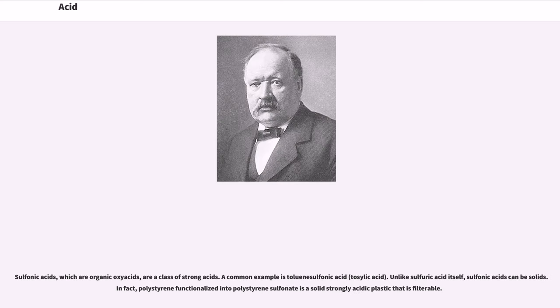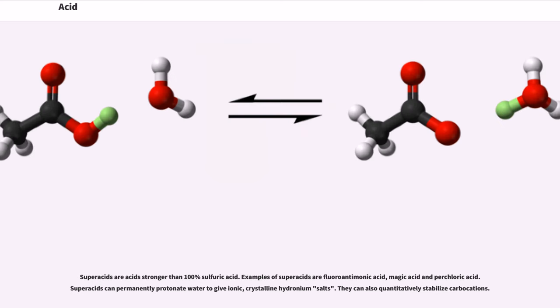Sulfonic acids, which are organic oxyacids, are a class of strong acids. A common example is toluenesulfonic acid (tosylic acid). Unlike sulfuric acid itself, sulfonic acids can be solids. In fact, polystyrene functionalized into polystyrene sulfonate is a solid, strongly acidic plastic that is filterable. Superacids are acids stronger than 100% sulfuric acid. Examples of superacids are fluoroantimonic acid, magic acid, and perchloric acid. Superacids can permanently protonate water to give ionic crystalline hydronium salts. They can also quantitatively stabilize carbocations.